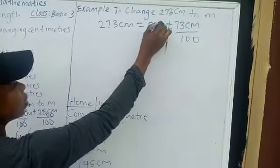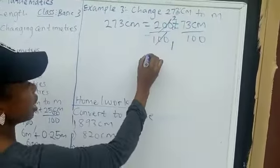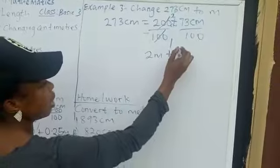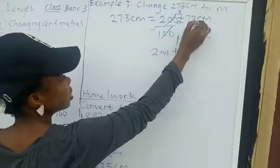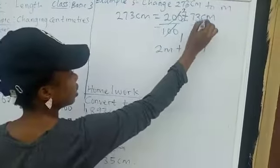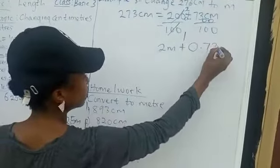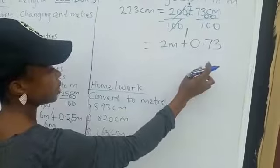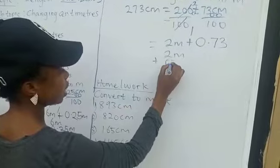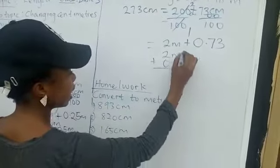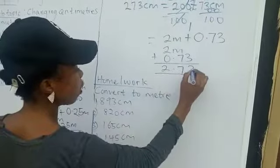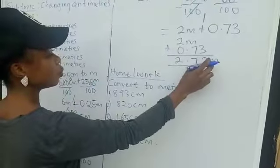100 in 100 is 1; 100 in 200 is 2. That's 2 meters. How many hundreds can we see in 73? Impossible. You write 0, put your decimal point, add 0 to make 730. How many hundreds in 730? That's 7, remainder 30. Add 0 again. How many hundreds in 300? That's 3. So that gives 0.73. Adding: 2 meters plus 0.73 gives 2.730 meters. Do not forget to put your unit, meter.